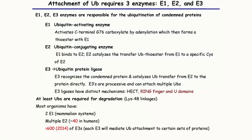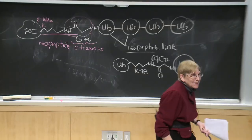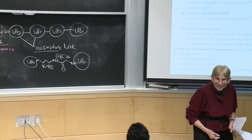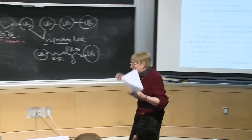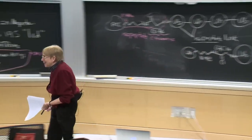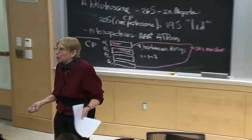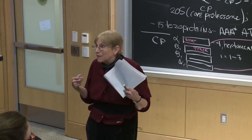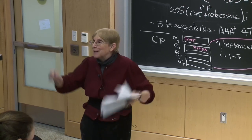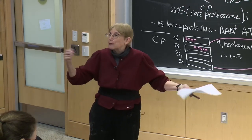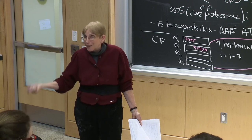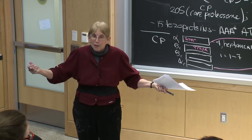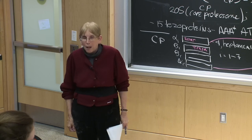Time is up — we didn't get to the exciting part. Next time we'll come back and talk about E1, E2, and E3 — the chemistry is straightforward and analogous to chemistry we've already seen. Then we'll briefly look at how this relates to HMG-CoA reductase degradation: I'll show you what the factors are, but it's still pretty much a black box.